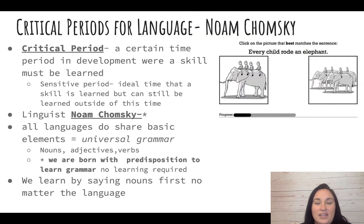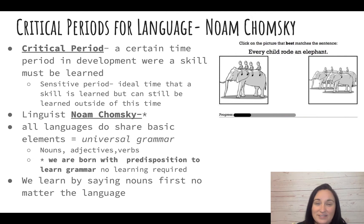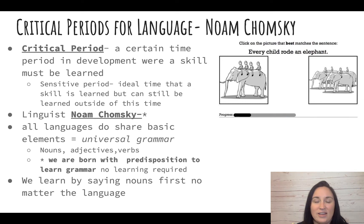In language development, there is something called a critical period, or some people call it a sensitive period for learning language. A critical period is a certain time where you have to learn that language — it's critical. If you don't learn it during that time period, you won't learn it. Whereas a sensitive period is an ideal time to learn something like a language, meaning if you don't learn it in that ideal time, you can still learn it, but it will be harder, take longer, and won't go as smoothly.